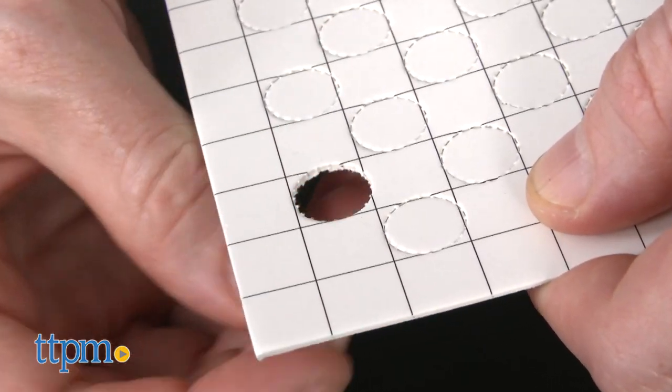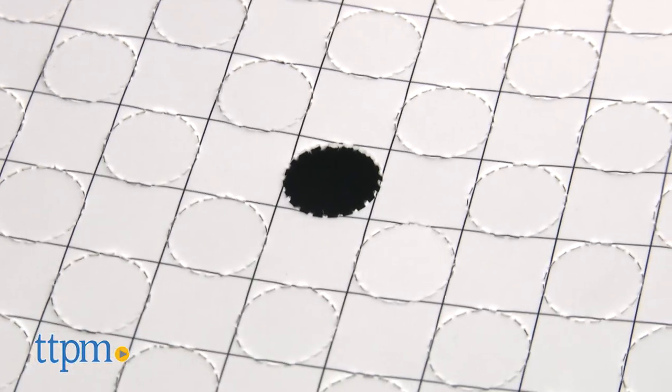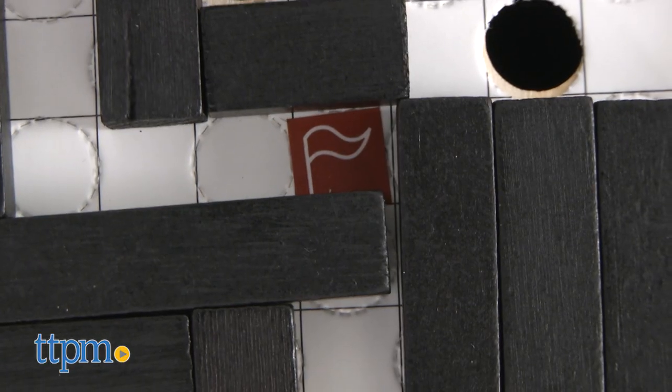The first part of building your maze is to lay down a paper grid and pop out some of the holes or traps for the marbles to fall into. Next, place your start and end stickers.